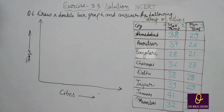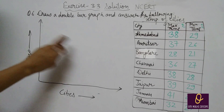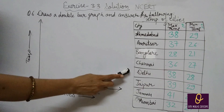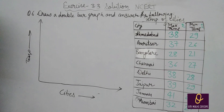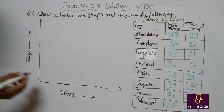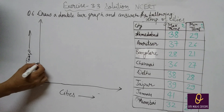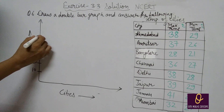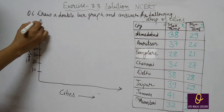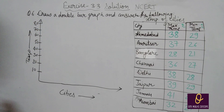Now question number six. आप इस question को note कर सकते हैं — table note करिए और double bar graph draw करने हैं, फिर questions के answer करने हैं. You will take cities along x-axis and temperature along y-axis. Scale simple लीजिए: 10, 20, 30, 40, 50, 60, 70, 80.